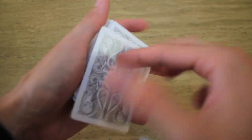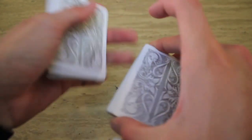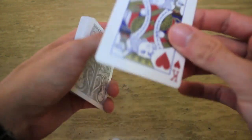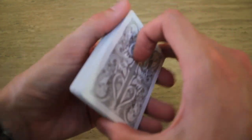I had a previous tutorial for a false cut that utilized the pass, where I pass the cards and it looks like I give the cards a cut, but the King of Hearts stays on top of the deck the whole time.